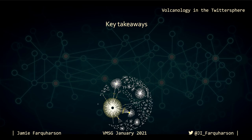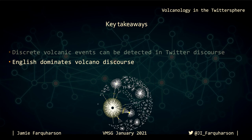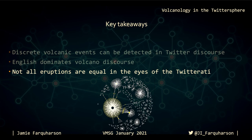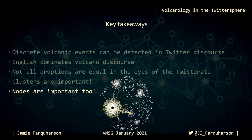To wrap up with some key takeaways: by comparing long and short-term counts of volcano-related strings, peaks above background chatter correspond well with discrete volcanic events. English dominates the volcano-centric Twittersphere even in discourse regarding eruptions in countries where English is not an official language. Not all eruptions result in equal Twitter traffic even if their characteristics are similar — for example, events clustered in time such as the eruptions of Kuchinoerabujima, Taal, and Fernandina, which all erupted in January 2020, yield much larger peaks, perhaps due to perceived linkages between these eruptions. The role of well-connected key node accounts with high perceived prestige is also significant.